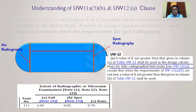Now let's look at UW-12, which is related to joint efficiency. Per UW-12a, a value of E (joint efficiency) not greater than that given in column A of table UW-12 — which is 1 — shall be used in design calculations for fully radiographed butt joints as per UW-11a, except that when the requirements of UW-11a5b are not met, a value of E not greater than that given in column B should be considered.